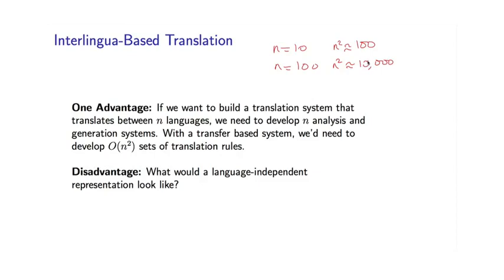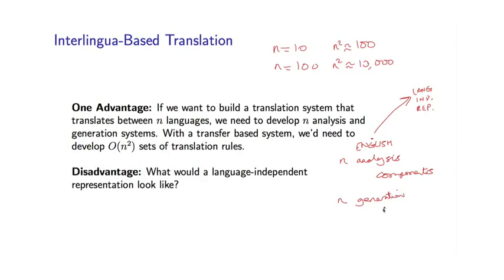The appealing thing with an interlingua-based system is that we just need to build N analysis components. For each of the N languages, we have to build a component which takes it — say English — and resolves it to some language-independent representation. The generation component would take the language-independent representation and generate, say, a French string or an English string. Because we've done away with the transfer component, in theory we just need these N analysis components and these N generation components — so that could be a saving.